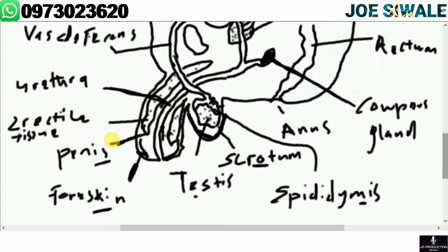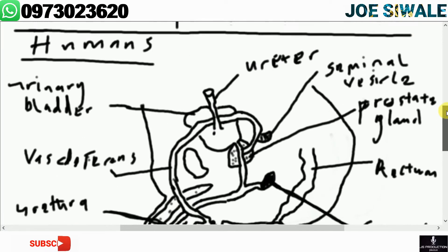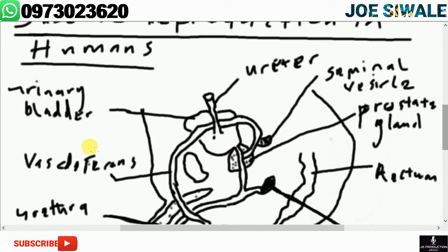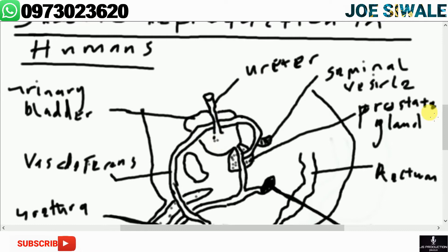We also have the urinary bladder, which stores urine, and the urethra, which transports urine from the kidney to the bladder. Those are the parts of the male reproductive structure.